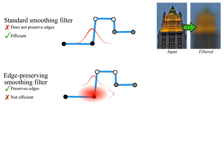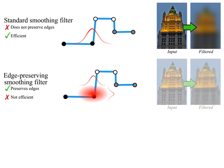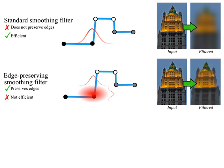An edge-preserving smoothing filter averages samples based on their distance in a high-dimensional space. This space is defined by a spatial and a range domain, and for this simple example it is two-dimensional. Evaluating such a filter for a color image requires working on a five-dimensional space, which implies additional memory and computational costs that quickly become prohibitive for large images.